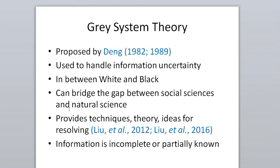Coming to the next slide: gray system theory was proposed by Zhu Long Deng in 1982 and later developed in 1989. We use it to handle information uncertainty with data. It is called 'gray' because it is between white and black — we know some information but not all. White means we have all information; black means we have none. Gray bridges the gap between social sciences and natural sciences, allowing information from social sciences to be processed mathematically.